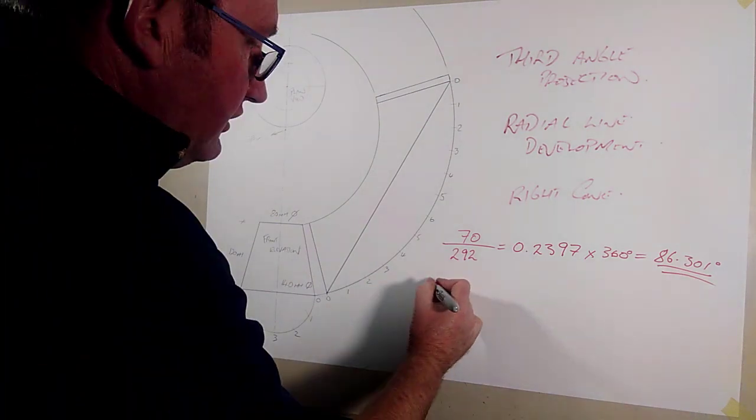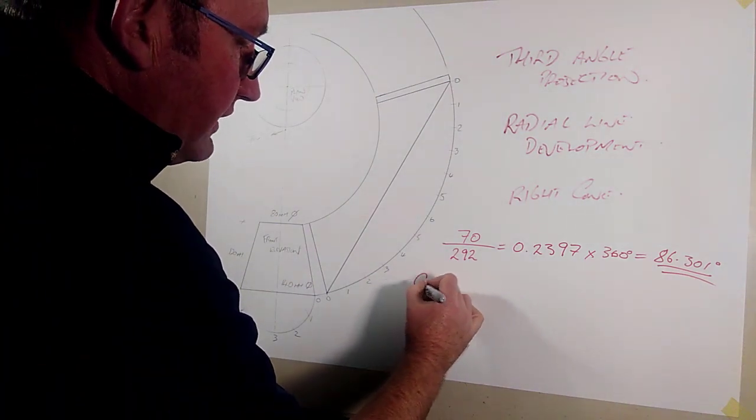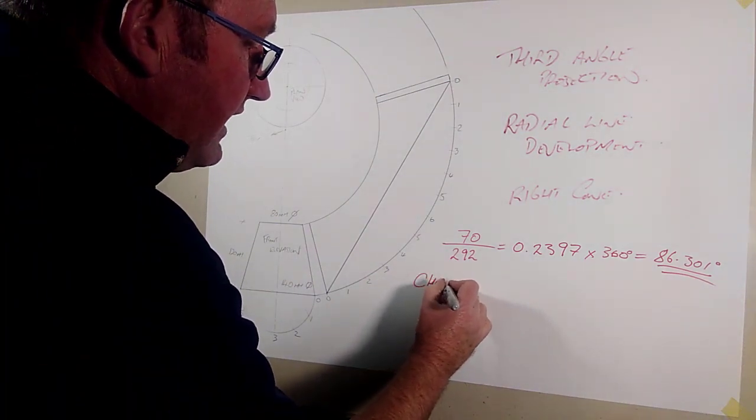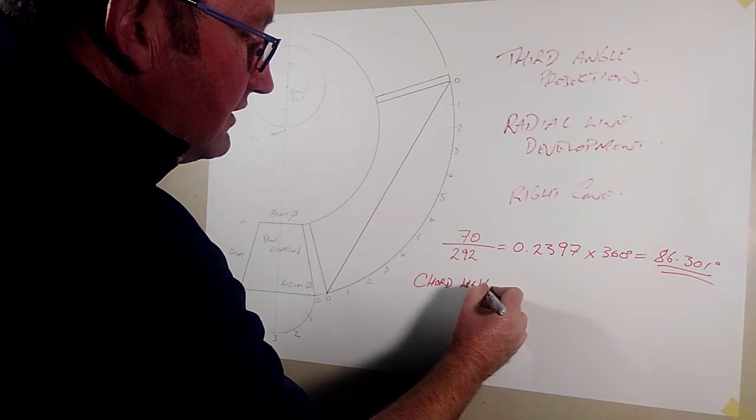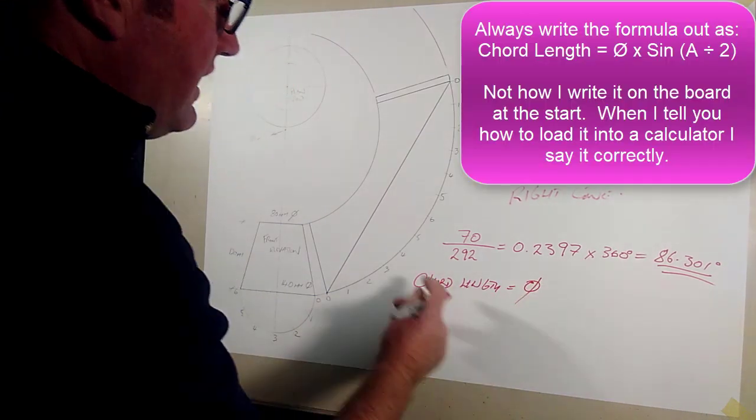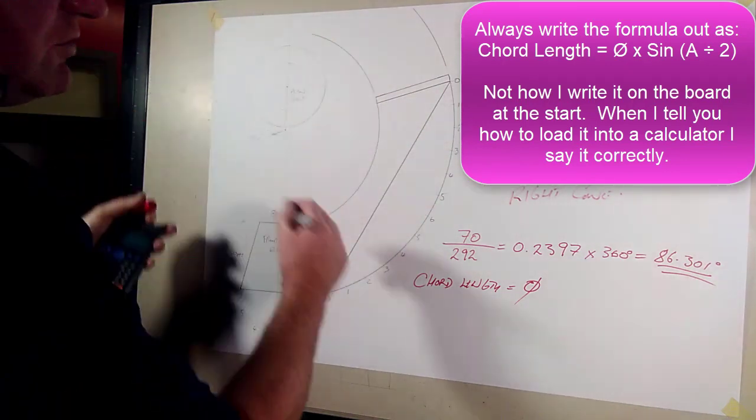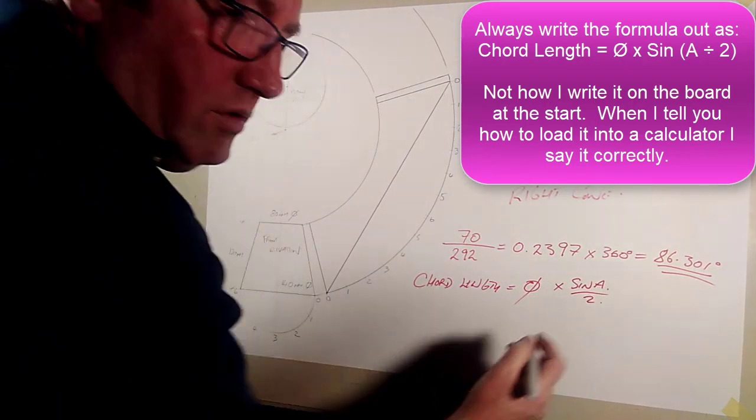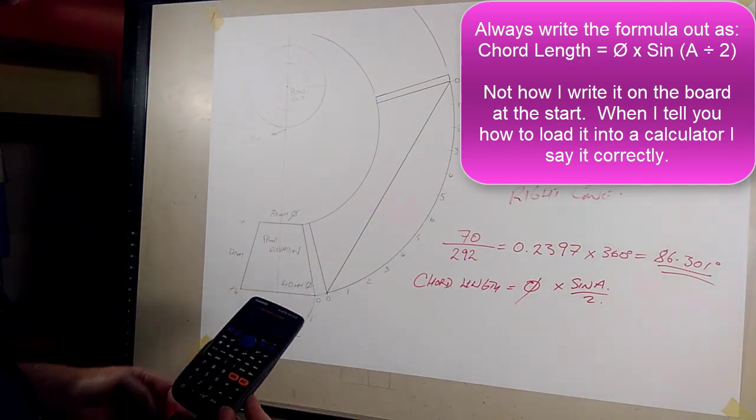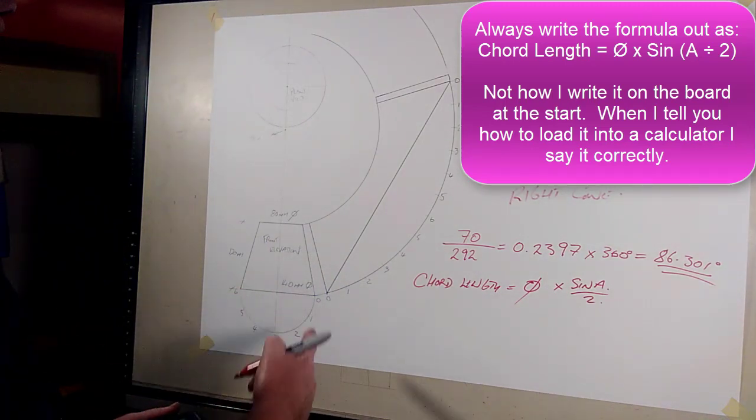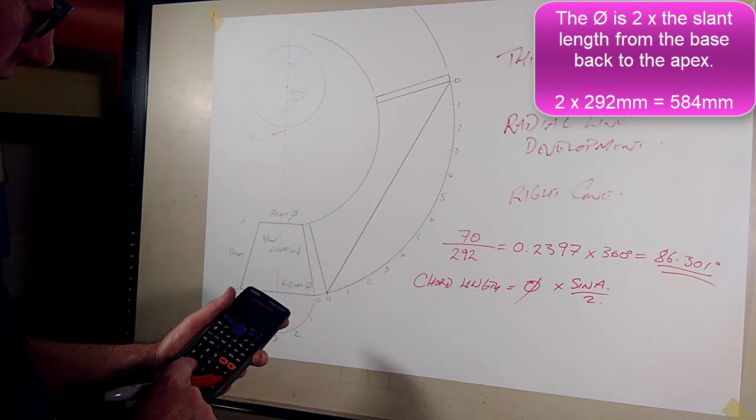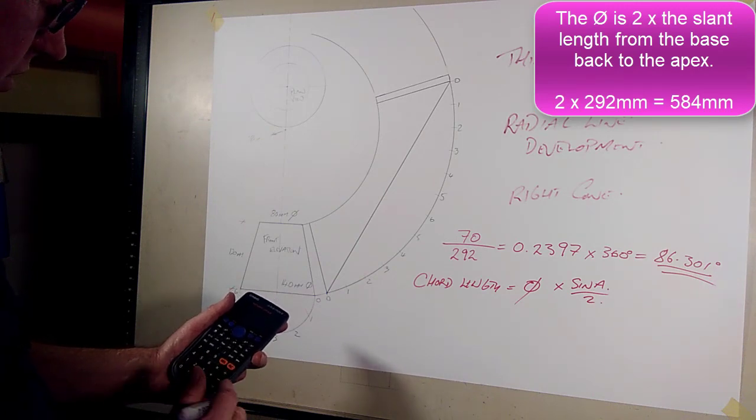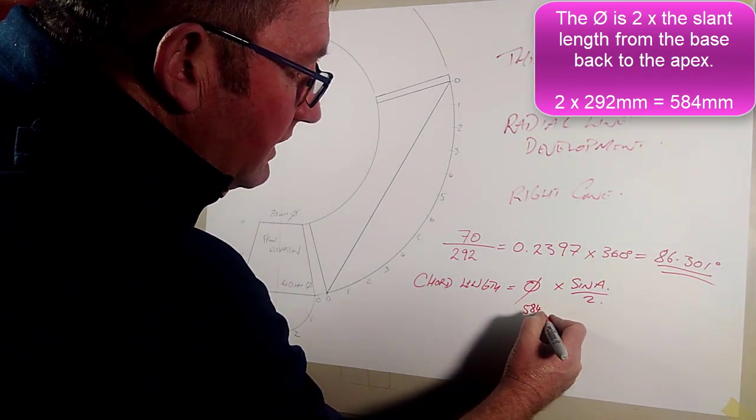And then I can put that into the chord length formula. So chord length equals diameter of the circle, diameter of the full circle, times sine a over 2. So the full diameter would be 292 times 2, so it would be 584mm.